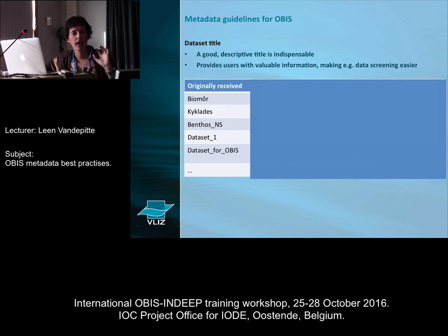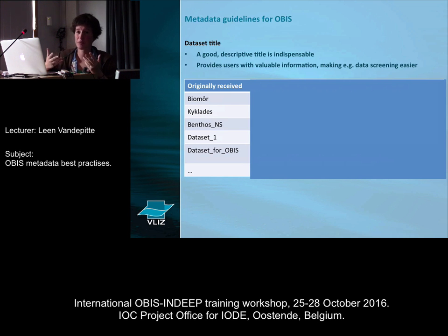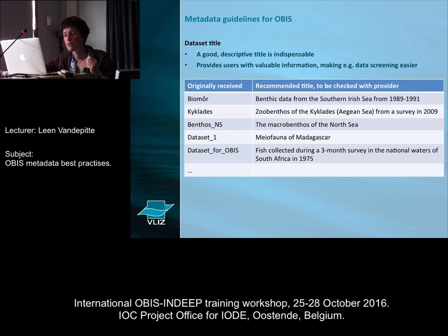I'll just give you some examples — these are actual titles of datasets as we receive them within the European node of OBIS. If you are not at all familiar with those datasets, nobody here would have a clue what they're about. What we get regularly is something like 'dataset for OBIS,' which doesn't give us a clue what it is about. So what we do is communicate back to the provider and propose a more descriptive title based on the information we can gather from the data. Look left and look right — everyone can make a quick decision on which title they prefer. It helps a lot if you know it's about meiofauna collected in Madagascar.